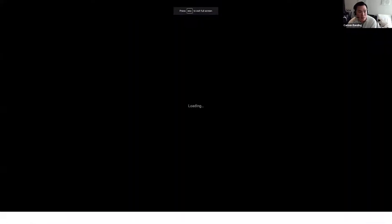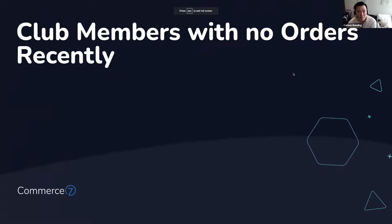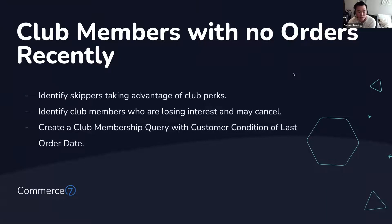Let's go to the second slide. Next I want to talk about how you can find a list of club members that have not placed an order recently. The purpose of this list could be for a few things — it can help you identify club members who are perpetually and habitually skipping their club packages and shipments, but still taking advantage of club perks. This is a good way to identify club members who haven't had any club orders recently in a given timeframe.